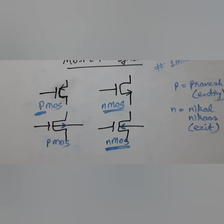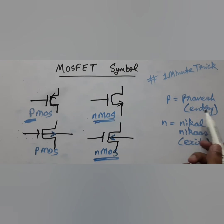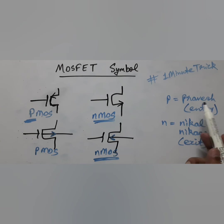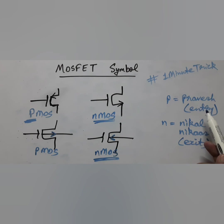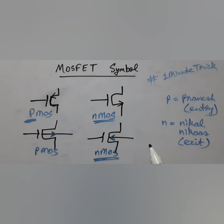So this is a trick which might help you. Just remember these two words: P for Pravesh is PMOS — that is, the arrow is entering. N is for Nikas or Nikkal — exiting of the arrow. Comrades, you can mention the topic on which you want further videos in this series.